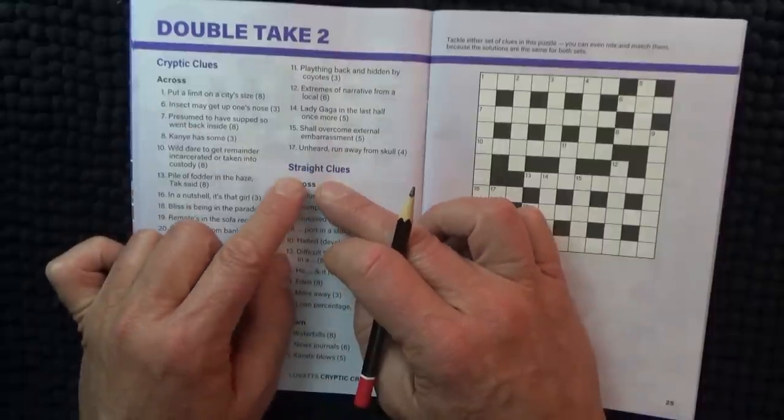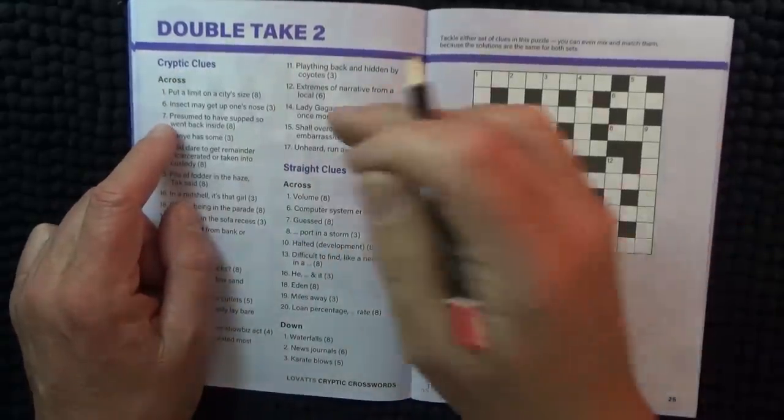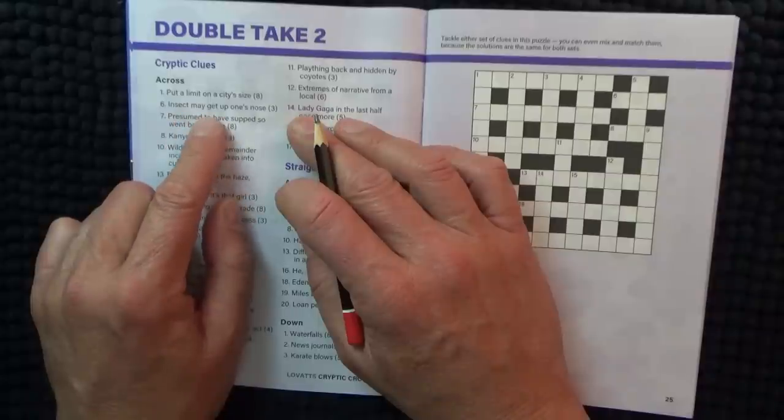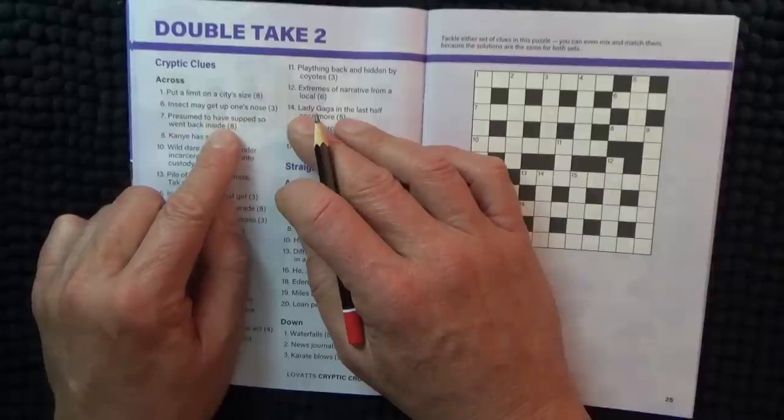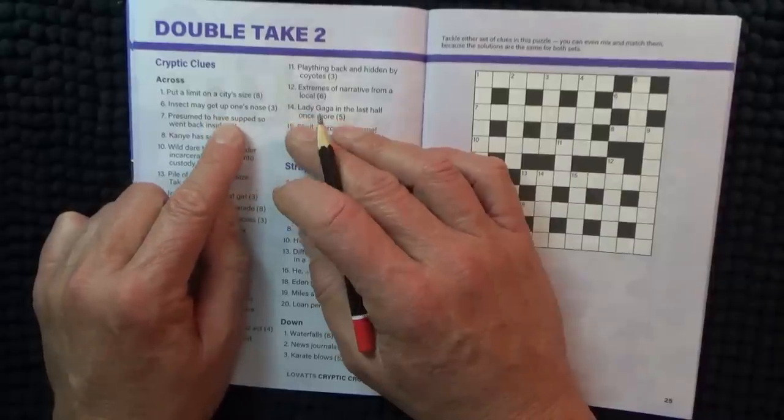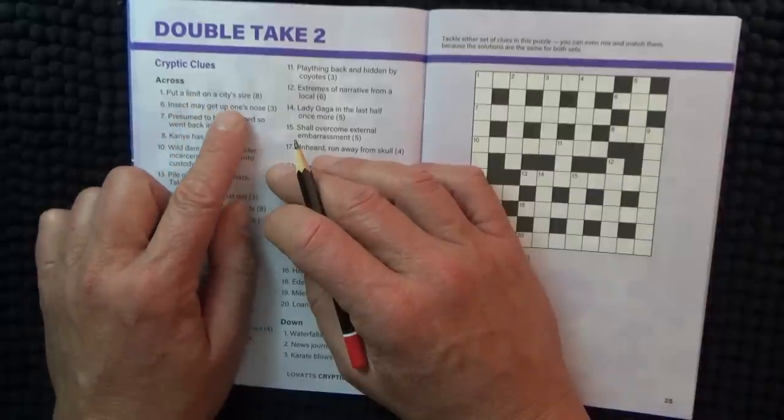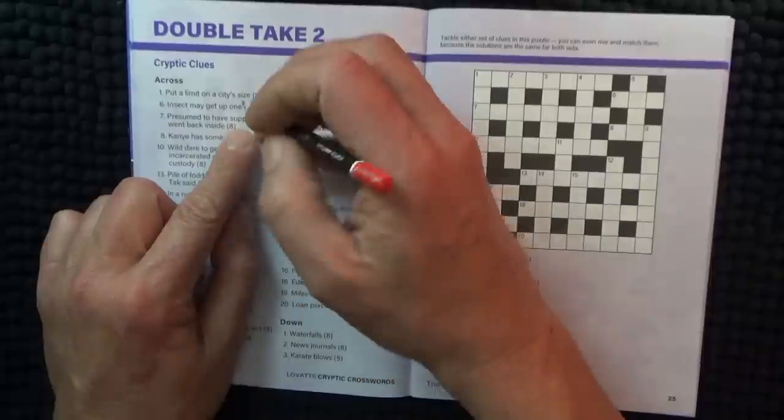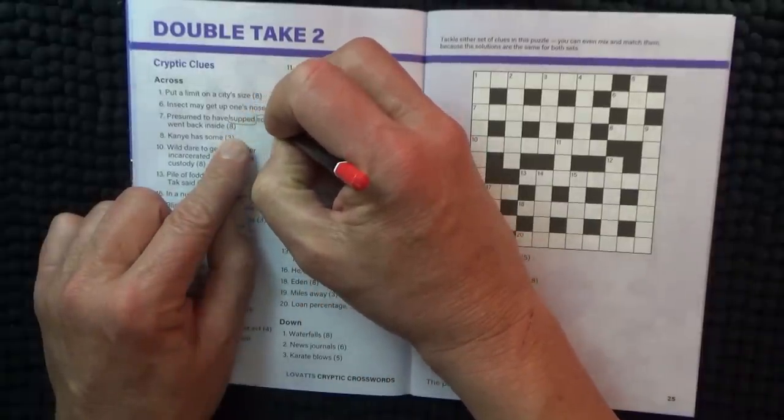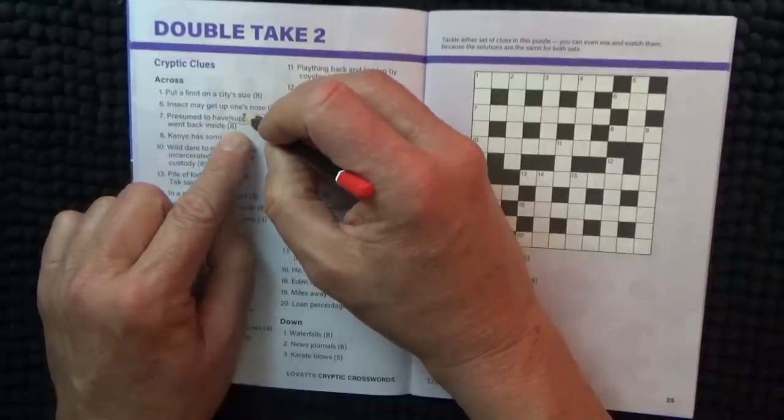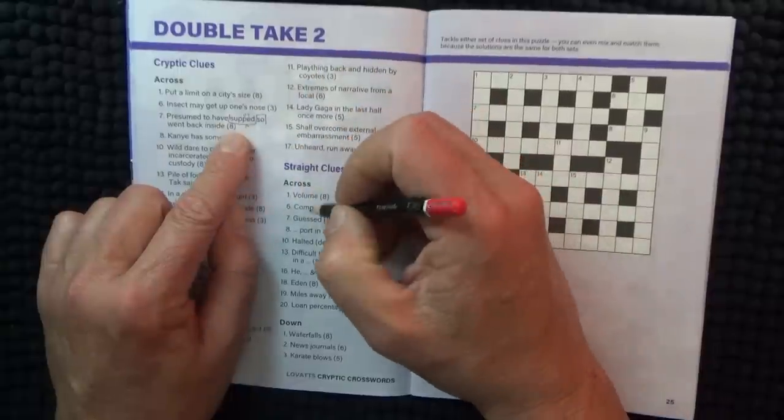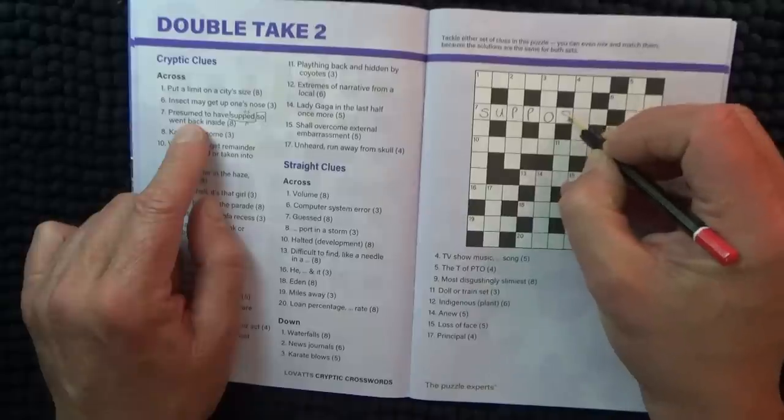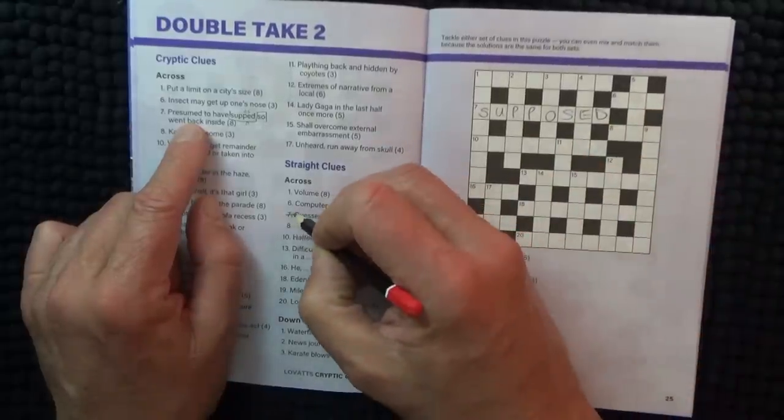We've got your regular clues and your cryptic clues. So, insect may get up one's nose. Okay. Put a limit on a city size. Presumed you have supped. So went back inside. Oh okay. So supped, and you've got to put it backwards. So it becomes the O and the S goes there. And presumed, and then guest. Is supposed.